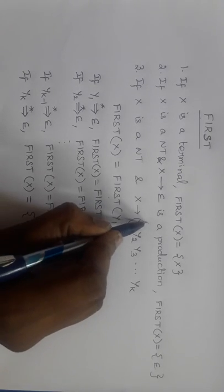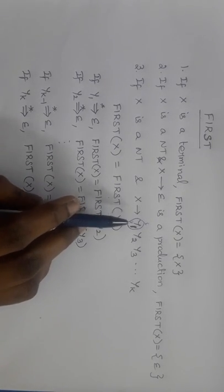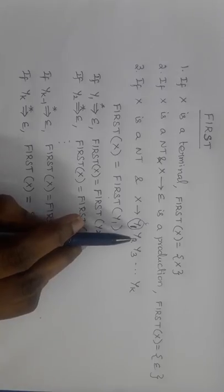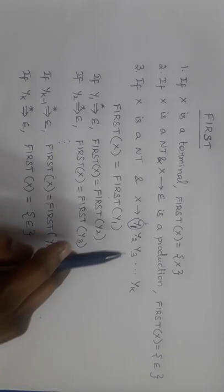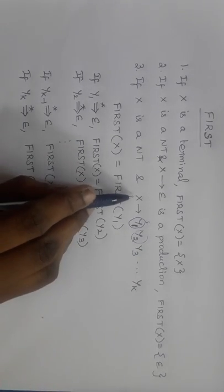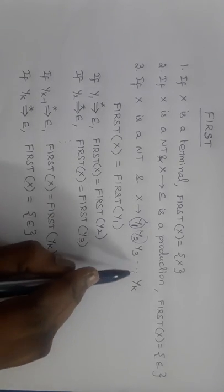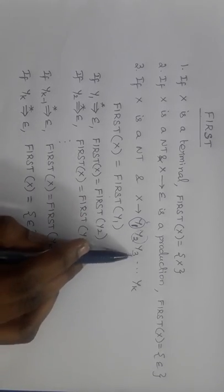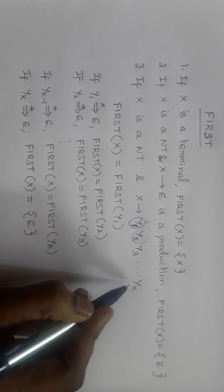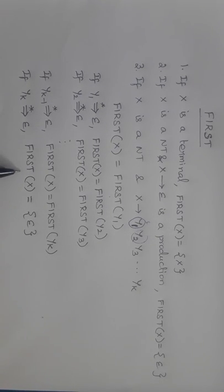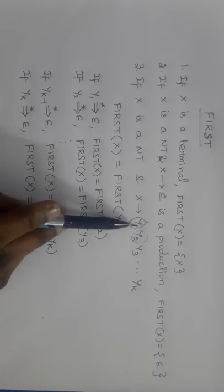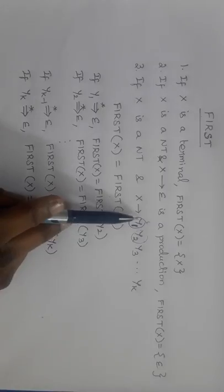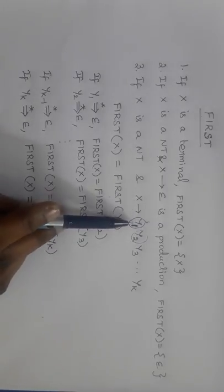If Y1 derives epsilon, it may be replaced by that epsilon production, so we need to add FIRST of Y2 also to FIRST of X. If Y2 also derives epsilon, then FIRST of Y3 must be included in FIRST of X. This is repeated until FIRST of Yk. If all k symbols Y1, Y2, Y3 up to Yk all derive epsilon, then we need to add epsilon to FIRST of X.